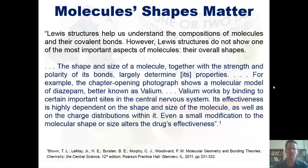The shape and size of a molecule, together with the strength and polarity of its bonds, largely determine its properties. For example, the chapter opening photograph shows a molecular model of diazepam, better known as Valium. Valium works by binding to certain important sites in the central nervous system. Its effectiveness is highly dependent on the shape and size of the molecule, as well as the charge distributions within it. Even a small modification to the molecular shape or size will alter the drug's effectiveness.